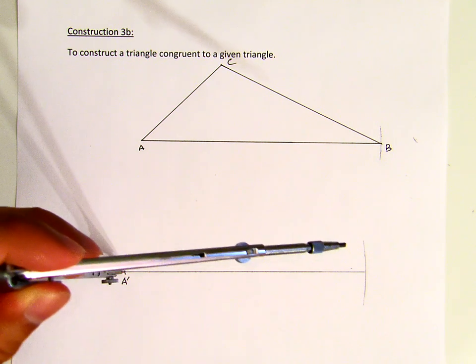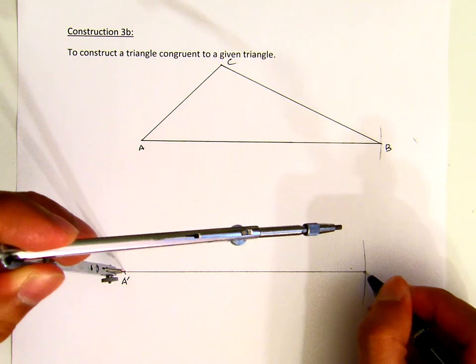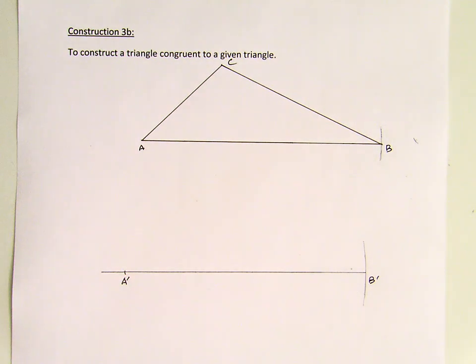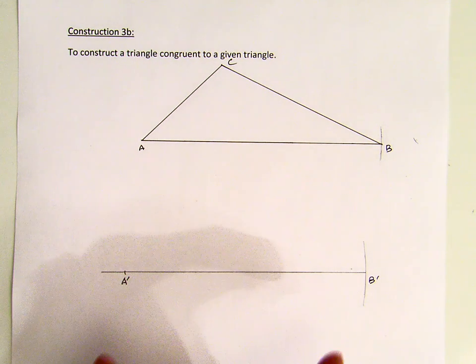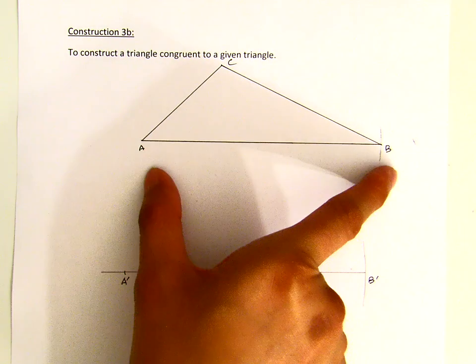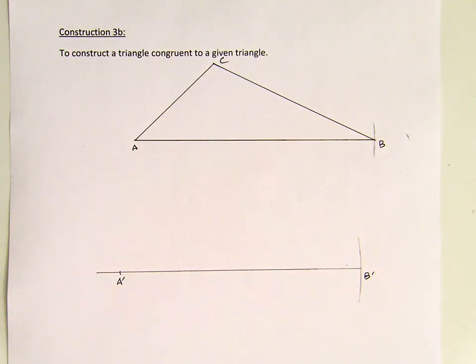Now, then we will now call this, this point here, B prime. Okay? This is our B prime, which means this segment here will be congruent to segment AB.